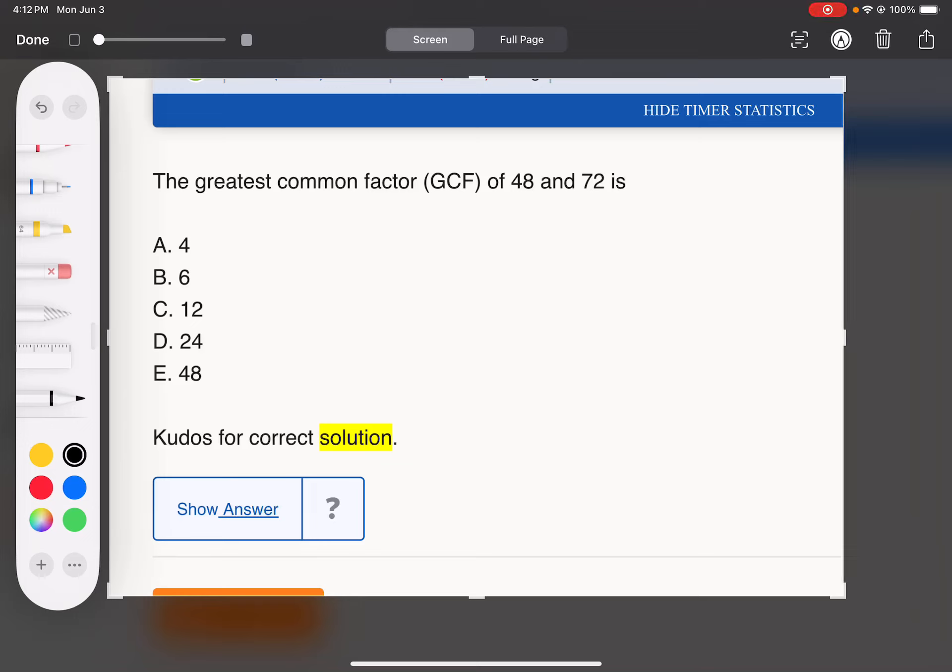Okay, GCF of these. We've got to factor these numbers. 6 and 8. 72, I happen to know, is 2 cubed times 3 squared, because it's 8 times 9.